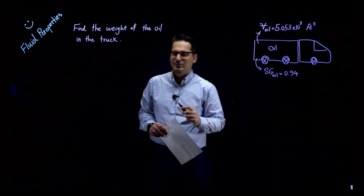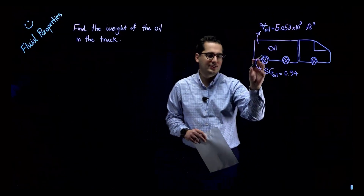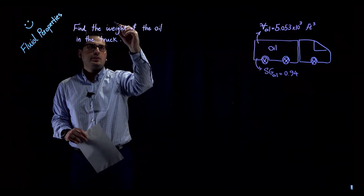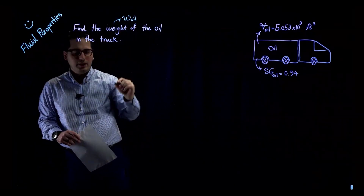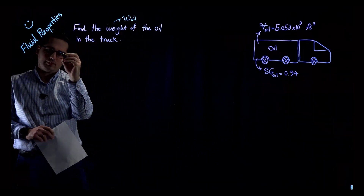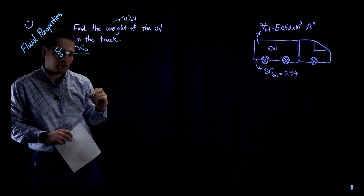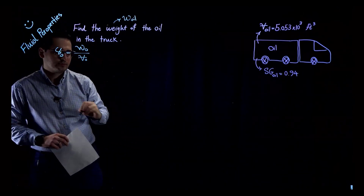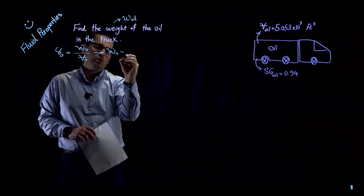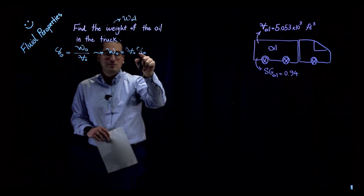Let's go over one more example. We have a truck carrying oil. We are given the volume of oil and the specific gravity of oil, and we want to find the weight of the oil. Using the specific weight equation, gamma of oil equals weight of oil divided by volume of oil. To find weight, I multiply volume by specific weight — but I only have specific gravity, not specific weight.